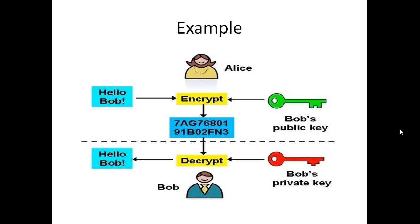Public and private keys are related in such a way that only the public key can be used to encrypt the message, and only the corresponding private key can be used to decrypt it. Even if you know the public key, it is difficult to break the secret message without knowing the private key. Even though public and private keys are related mathematically, it is not feasible to calculate the private key from the public key. Thus cryptography is explained.